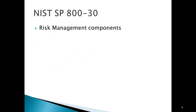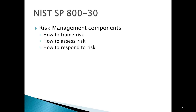It consists of several risk management components. How to frame risk — what's the context within which you view risk in an organization. How to assess risk — what risks do you have and how bad are they. How do you respond to risk — given that you've assessed your risks, you know what they are and how bad they are, how do you deal with it. And then how do you monitor risk on an ongoing basis — you need to know what your risk levels are, how they change, and how your responses to risk are working or not.